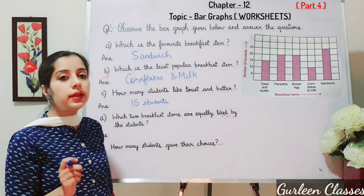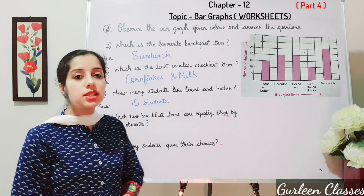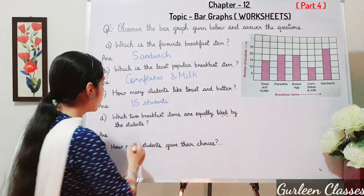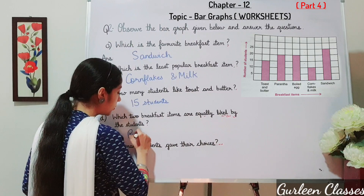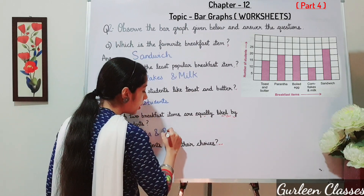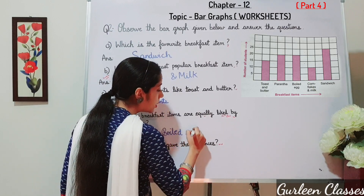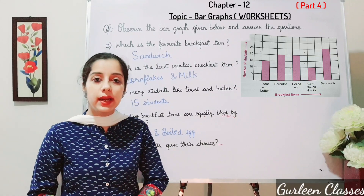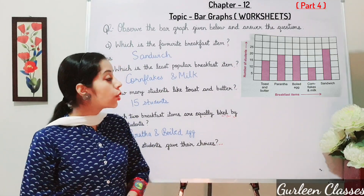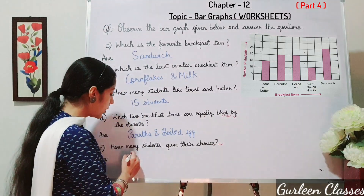Part D: which two breakfast items are equally liked by the students? Paratha and boiled egg are equally liked by the students, with 20 students each. Next, how many students gave their choices in total? 90 students gave their choices.